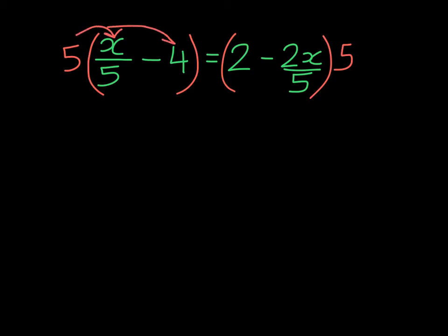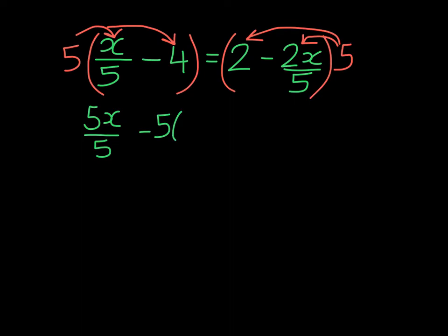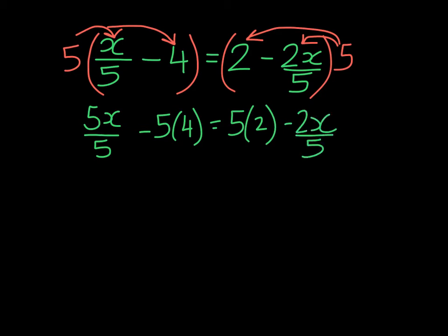So we're going to multiply 5 times the first term and the second one on the left, and on the right-hand side we do the same. I'm going to write this step out: 5 times x over 5, 5 times negative 4, 5 times 2, and negative 2x over 5 times 5.